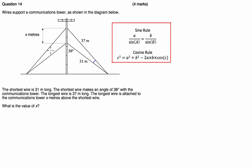So what we've got here is a communications tower that's supported by two sets of wires, a short one and a long one. The short one makes an angle of 38 degrees with the tower and the long one is connected to the top of the communications tower and is 37 metres long. Now what we have to find is the difference between where the two wires are connected to the communications tower.